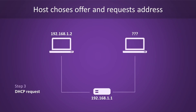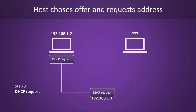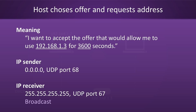Moving on to step number 3. At this point, the host has received at least one offer for an address, and it now gets to pick which one it wants. After having done so, it will send out a DHCP request message to everyone on the network — once again, this is a broadcast — and in this message it will say which address it picked. In this specific example, the host wants to claim 192.168.1.3 for 3600 seconds, which is equal to 1 hour. The sender field says 0 because we don't have an address yet, and the ports used are 68 to 67, which is client to server.